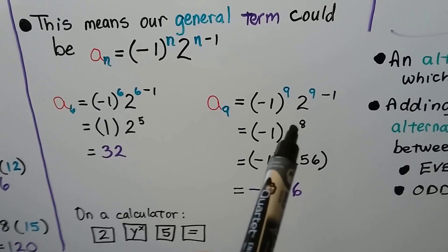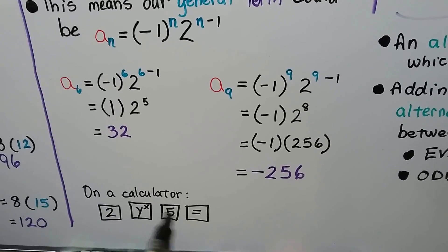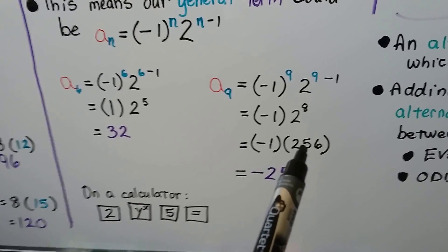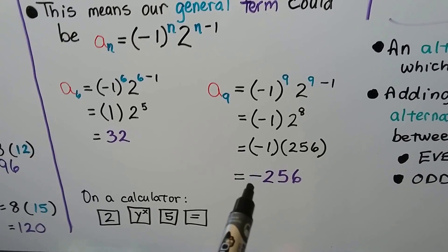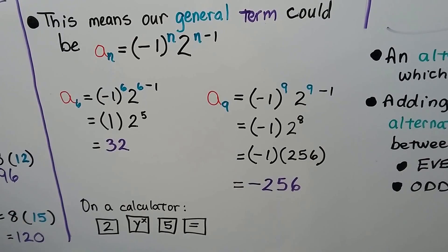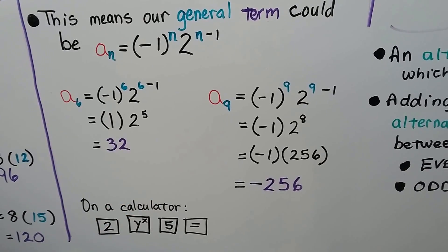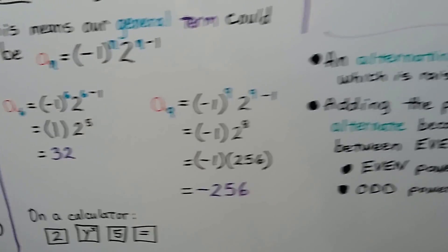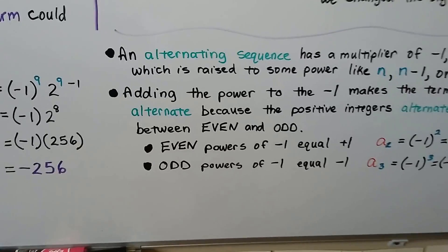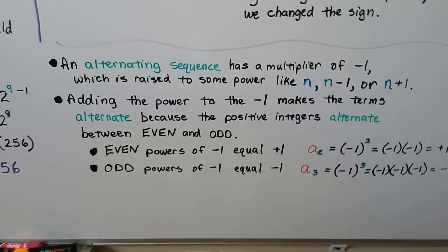So now we do two to the eighth power. We can do it on our calculator and we get 256. We multiply it by the negative one, and we have a negative 256. So the ninth term would be negative 256. An alternating sequence has a multiplier of negative one.